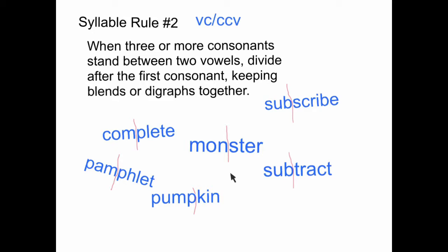Additional examples include: subscribe, subtract, pamphlet, and pumpkin. In 'pumpkin,' you divide after the MP because MP is a blend.